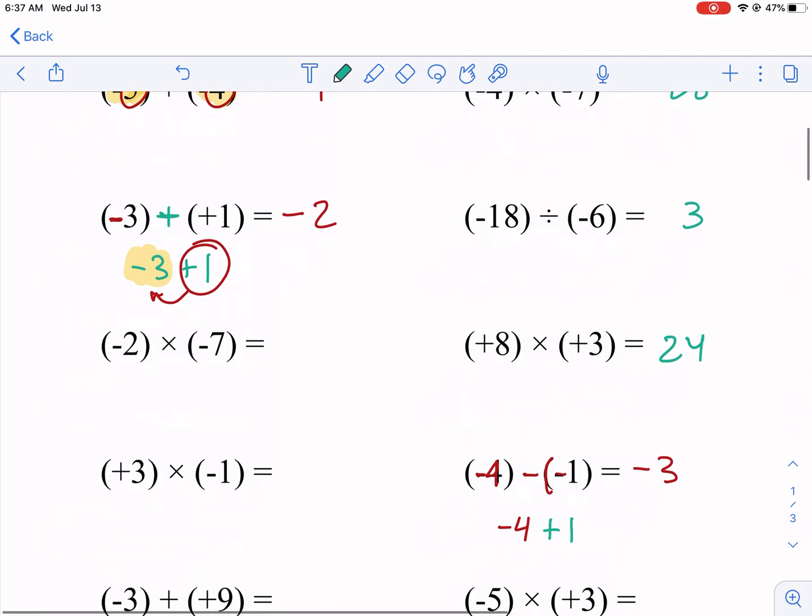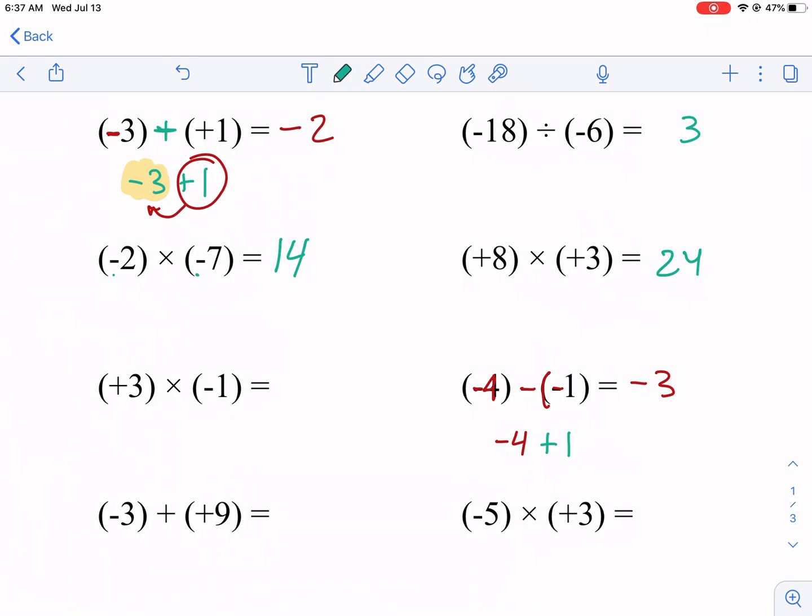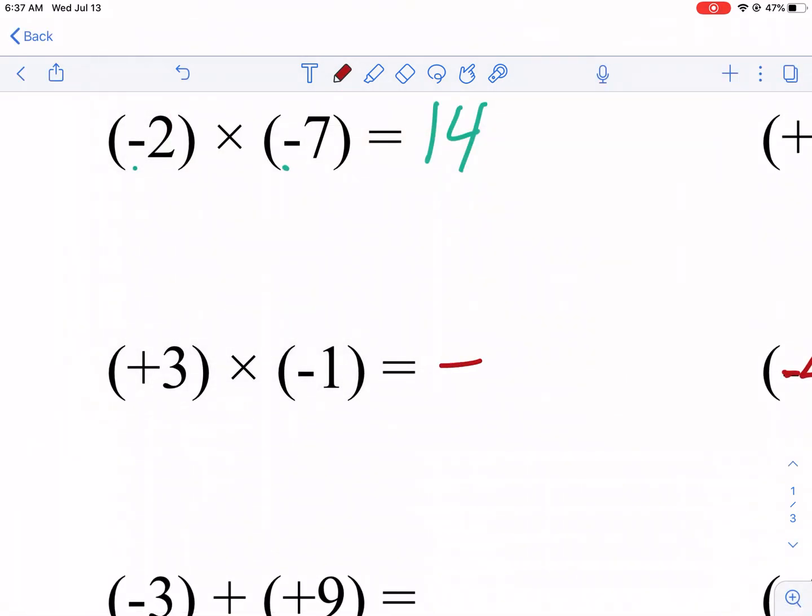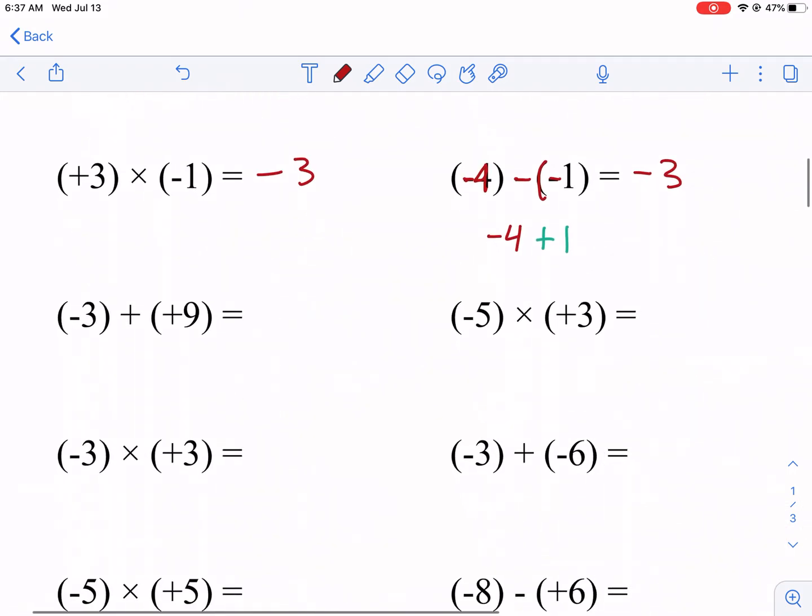Trying to find one where the signs are different, positive 14, because we have two negatives multiplied together. Here's one. A positive times a negative is going to be a negative. You need the sign for negatives. Three. And then that's all there is to it.